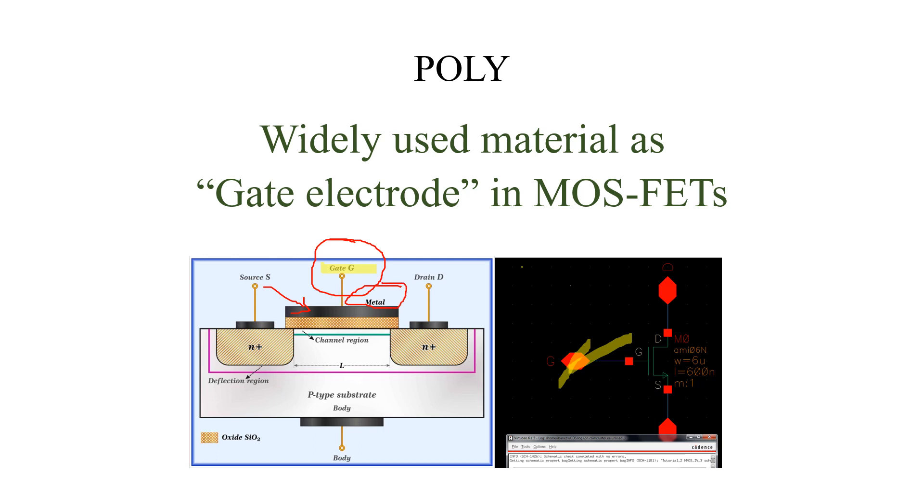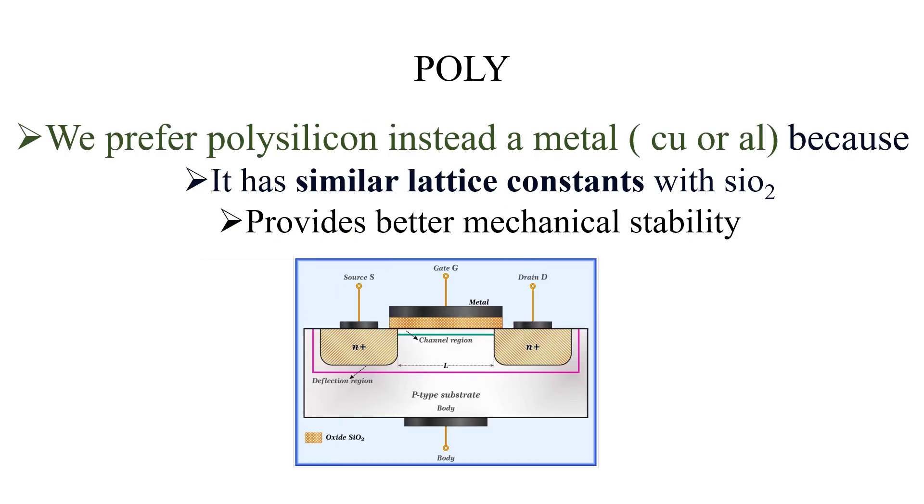Polysilicon is preferred over metal for a couple of reasons. One of the main reasons is poly has very similar lattice constants or lattice parameters with SiO2. This insulator is generally made of SiO2.